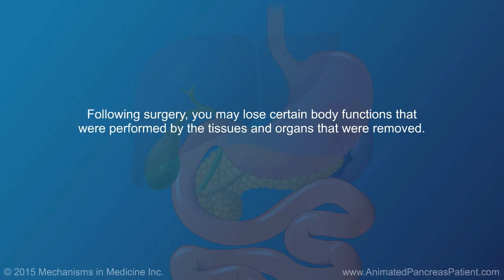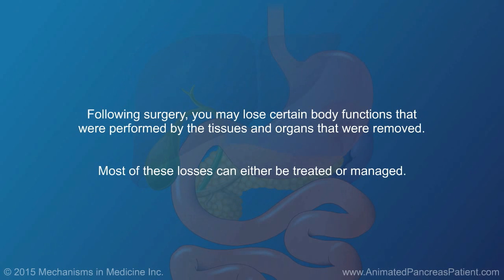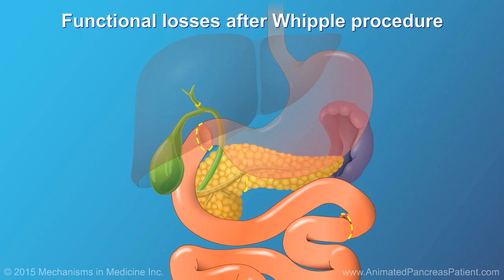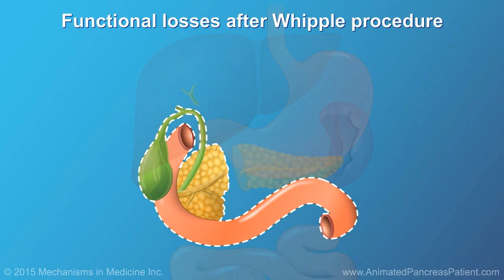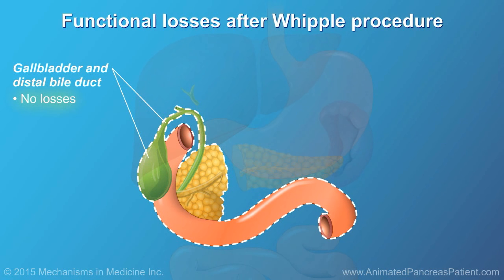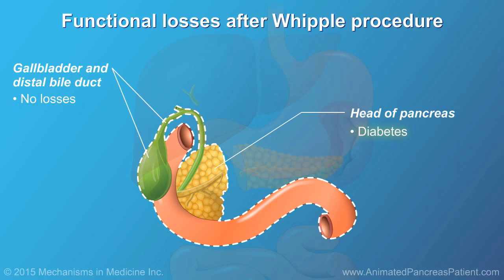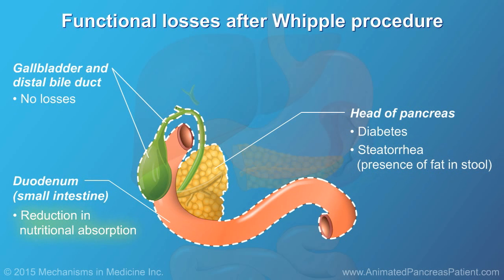Following surgery, you may lose certain body functions that were performed by the tissues and organs that were removed. Most of these losses can either be treated or managed. After a Whipple procedure, there are usually no functional losses associated with removing the gallbladder or a portion of the bile duct. However, you may develop diabetes, and you may experience the presence of fat in your stool, called steatorrhea. You may also experience a reduction in nutritional absorption.